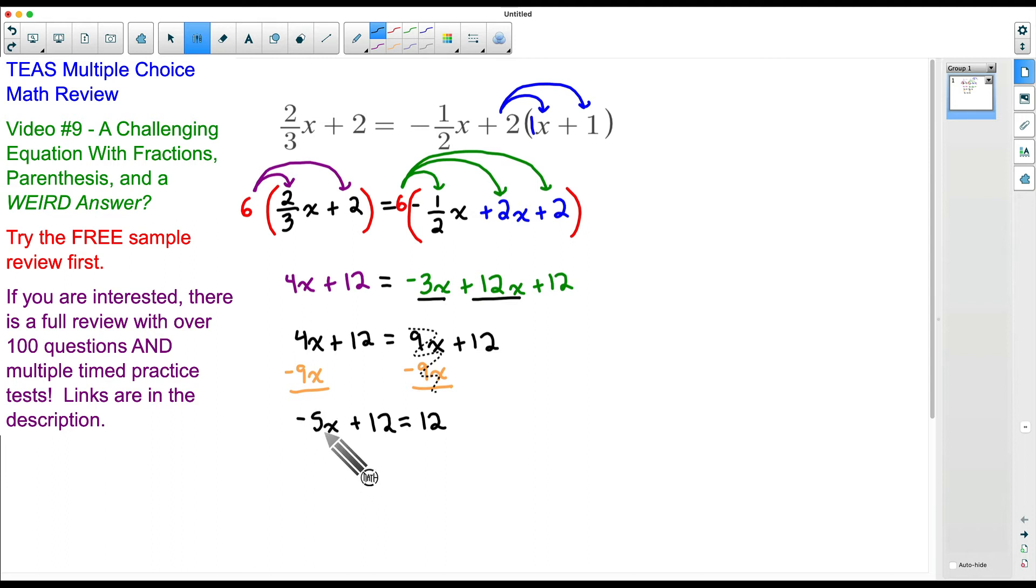So we finally have x on one side and we want to get x by itself. Since this twelve is getting added right here and I want to get rid of it, I'm going to do the opposite of adding, which is subtracting twelve. Again, remember to do that to both sides. Well, twelve minus twelve, it cancels out. But technically that is truly equal to zero, right? I mention that for a reason here. Let's bring down what we have left. Negative 5x. Bring down our equals. And twelve minus twelve.